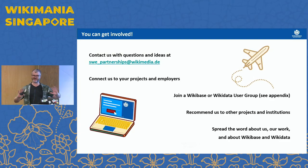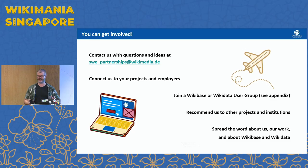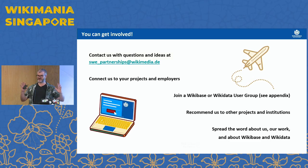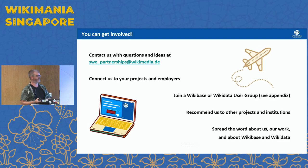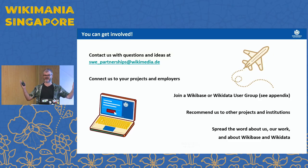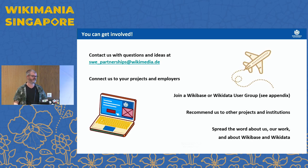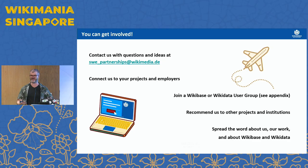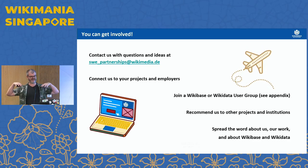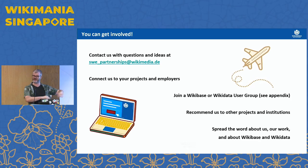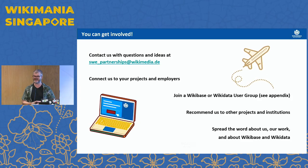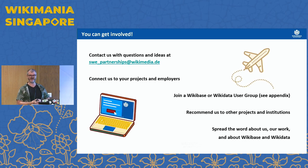How can you get involved? The easiest way is to email us at swe_partnerships@wikimedia.de. We are willing to talk to anyone and answer any questions you might have. You can also spread the word about who we are, what we do, or just about Wikidata and Wikibase. If you have a project you want to put on Wikibase or you have a Wikibase already that you want to do more with, ask us about that. You can also promote us to institutions — if you work at an institution looking to digitize or wants to get involved with Wikibase or Wikidata, feel free to send them in our direction.